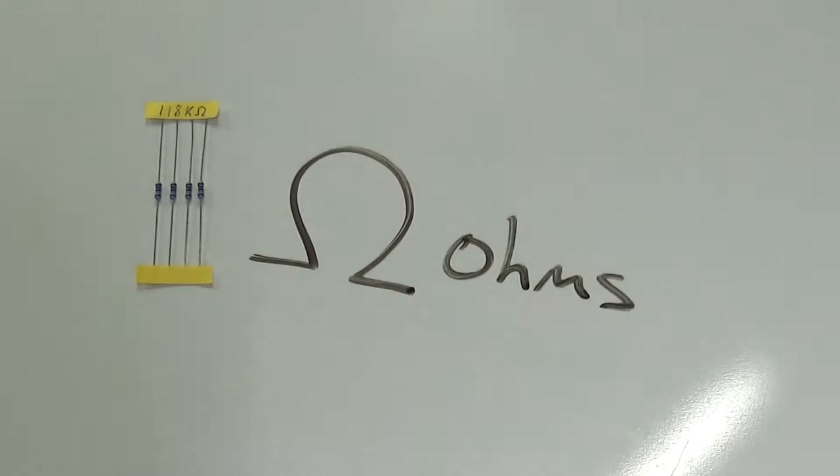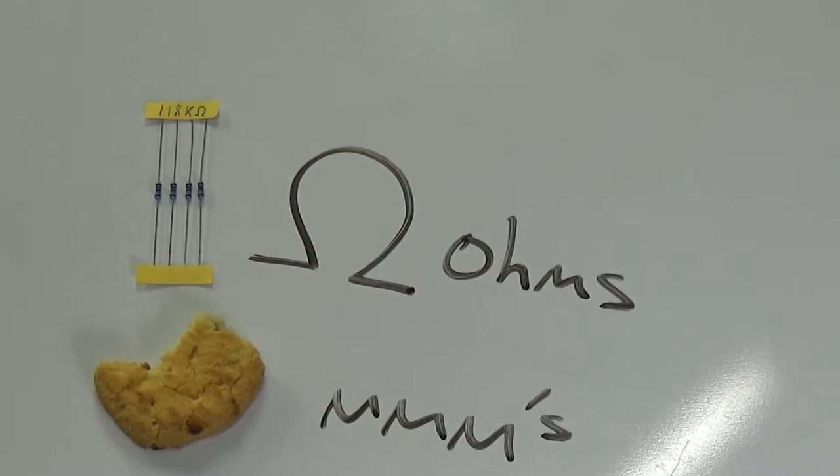Resistors are typically measured in ohms, but biscuits are typically measured in mmmms.